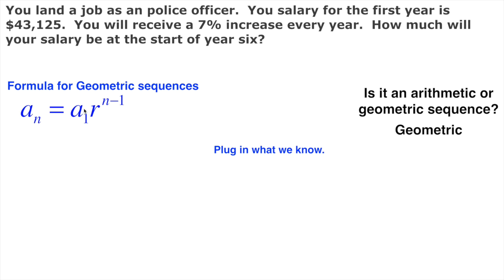Well, we know a₁. a₁ is the very first term in the sequence, or the amount that we started with. The amount we start with here is 43,125.